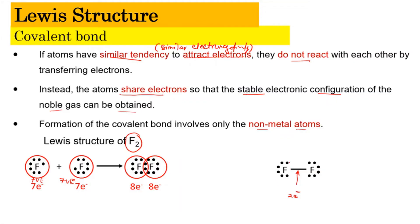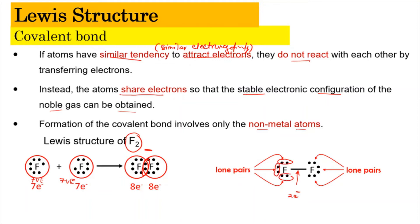Each fluorine shares two electrons, giving eight altogether. This overlapping region represents a single bond. The pairs of electrons on each side that are not shared are known as lone pairs — two electrons together is a lone pair. Meanwhile, the shared pair is known as the single covalent bond.